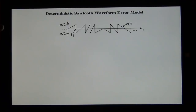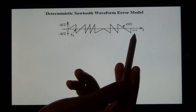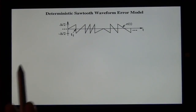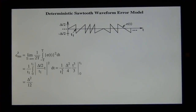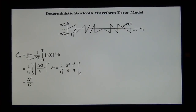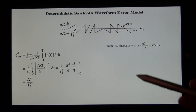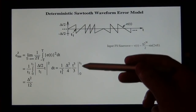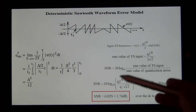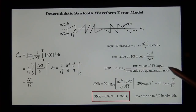The error signal can be statistically modeled. For a sinusoid input, the total power of the quantization noise is delta squared divided by 12, spread evenly across the entire spectrum. You can also calculate the total power of a full-scale sinusoid input signal. The signal-to-quantization noise ratio is calculated by dividing the total signal power by the total quantization noise power.